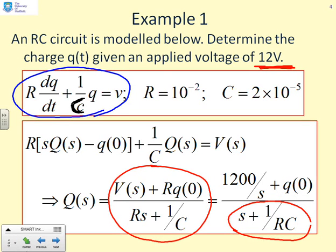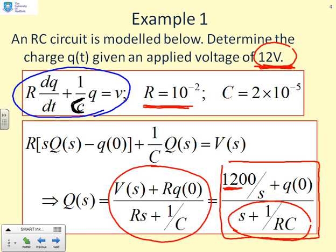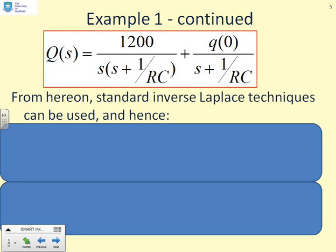So you'll notice here on the right, I've put the pole factor in pole-zero form by dividing by capital R. So consequently, I need to divide all the numerator terms by capital R as well. Now, if you remember R, here it is, it's 10 to the minus 2. V is 12. So 12 divided by 10 to the minus 2 gives me this 1200. So that's where the 1200 over s has come from. And RQ(0) becomes just Q(0). So this is the function I'm interested in. 1200 over s plus Q(0) all divided by s plus 1 over RC.